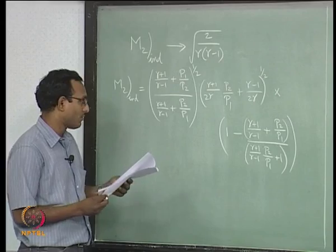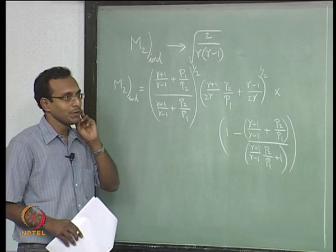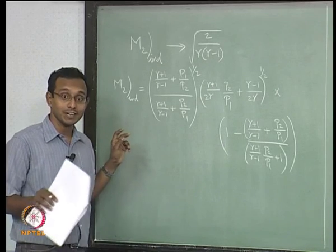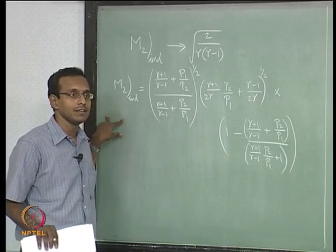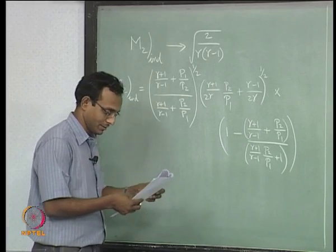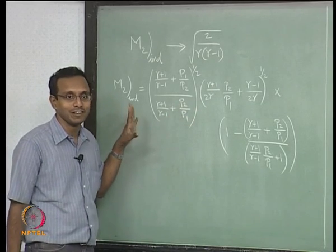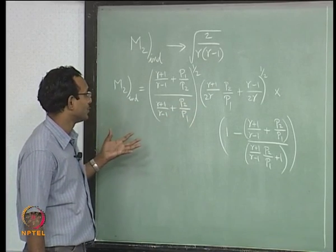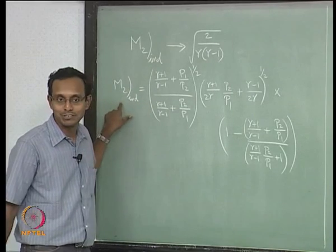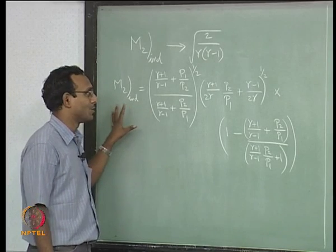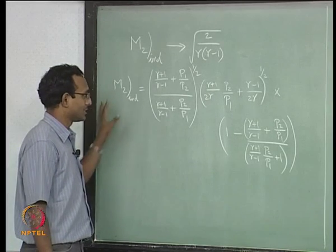Now we want to find when M2 induced goes past 1. What should be the minimum P2/P1 such that the flow goes to M = 1 behind the shock? I tried solving this expression but it is very complex — it is not easy to write P2/P1 in terms of M2 induced algebraically. So we will go to the graphical method; we do not need to solve it algebraically for our course.